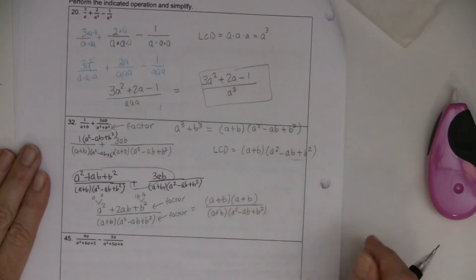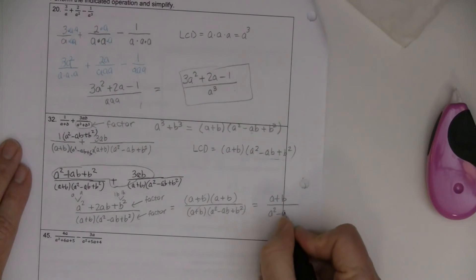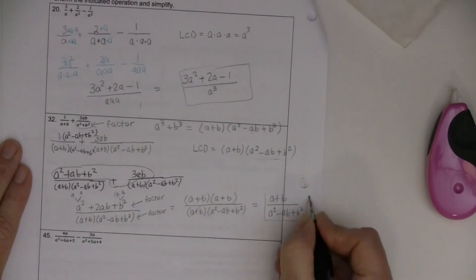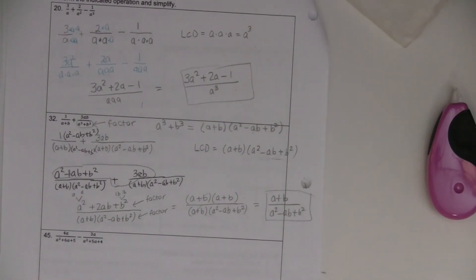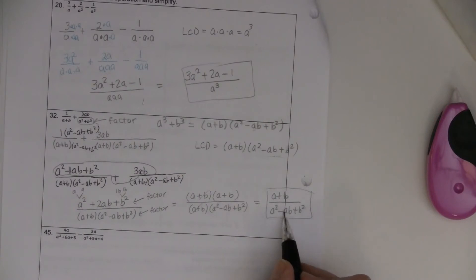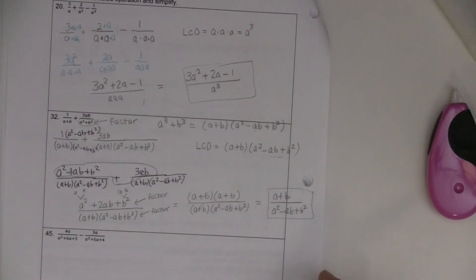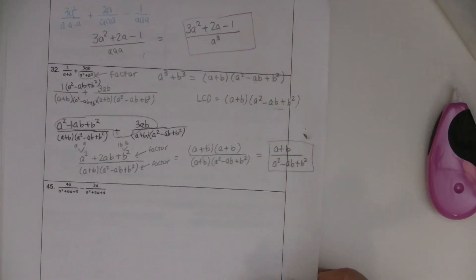So A plus B times A plus B over A plus B times A squared minus AB plus B squared. The A plus B cancels out, and we get simply A plus B over A squared minus AB plus B squared. This won't reduce further because A plus B is a binomial and A squared minus AB plus B squared is a trinomial — they're not even the same size, and they have to be exactly the same to reduce.